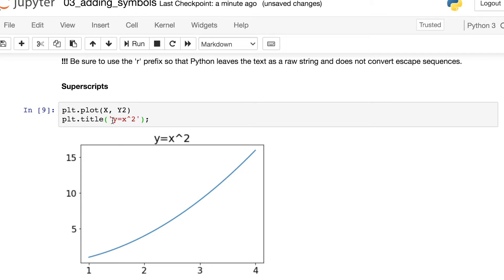To use TeX, all we need to do is put two dollar signs around this equation. And I'm also going to recommend here that we use an R outside of the string. Using that R prefix just tells Python to leave this as a raw string and to not convert any escape sequences.